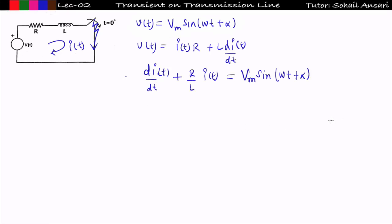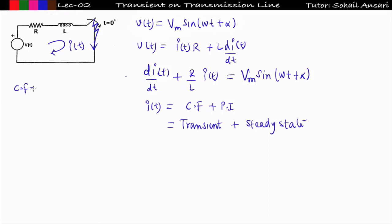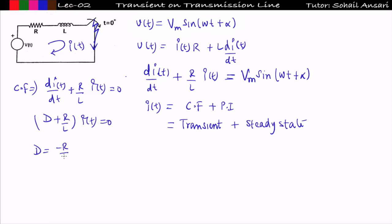Rearranging this equation gives a first-order differential equation. The response i(t) is the combination of the complementary function (CF) plus the particular integral (PI). The CF is the transient state and the PI is the steady state response. To find the CF, we set the right side to zero: di/dt + (R/L)·i(t) = 0, which gives d = −R/L, so CF = A·e^(−R/L·t). That is the transient response.